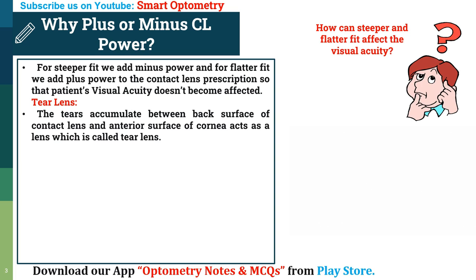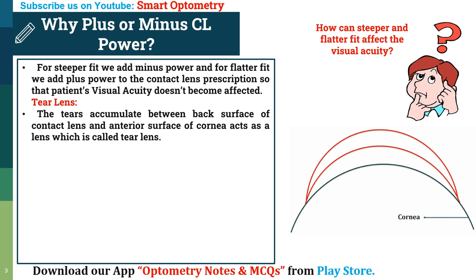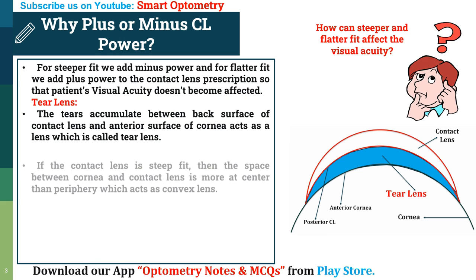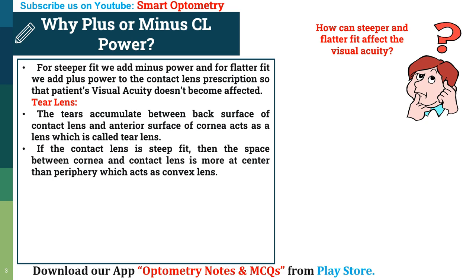Here in this figure, this is the cornea, this is the contact lens, and the tears that accumulate between the posterior surface of the contact lens and anterior surface of the cornea is called the tear lens. If the contact lens is a steep fit, then the space between the cornea and contact lens is more at the center than the periphery, which acts as a convex lens.